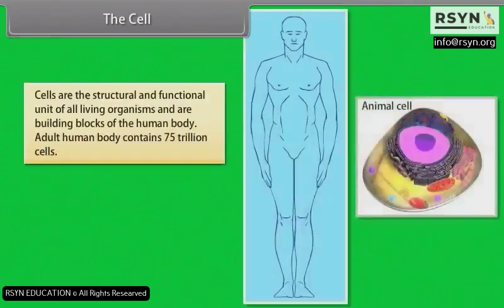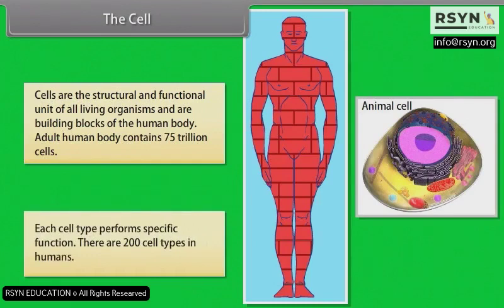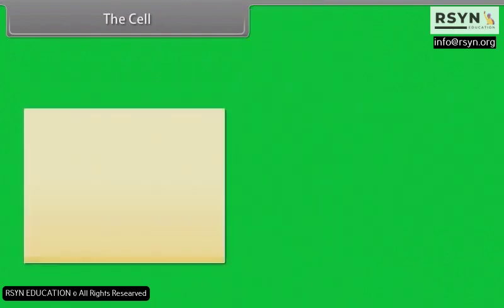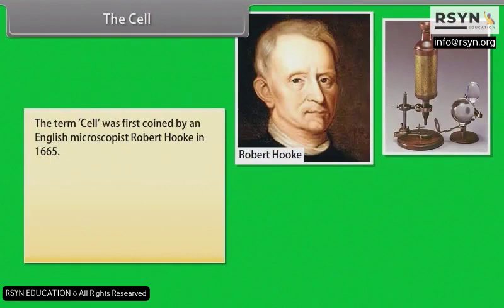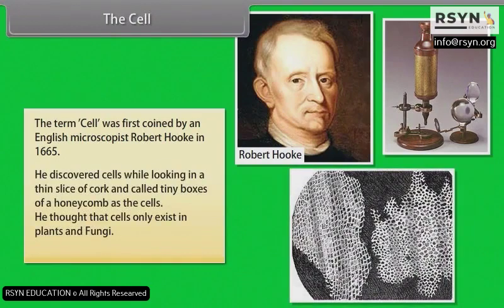Cells are the structural and functional unit of all living organisms and are building blocks of the human body. The adult human body contains 75 trillion cells. Each cell type performs a specific function, and there are 200 cell types in humans. The term cell was first coined by English microscopist Robert Hooke in 1665, who discovered cells while looking at a thin slice of cork and called the tiny boxes of a honeycomb the cells. He thought that cells only exist in plants and fungi.